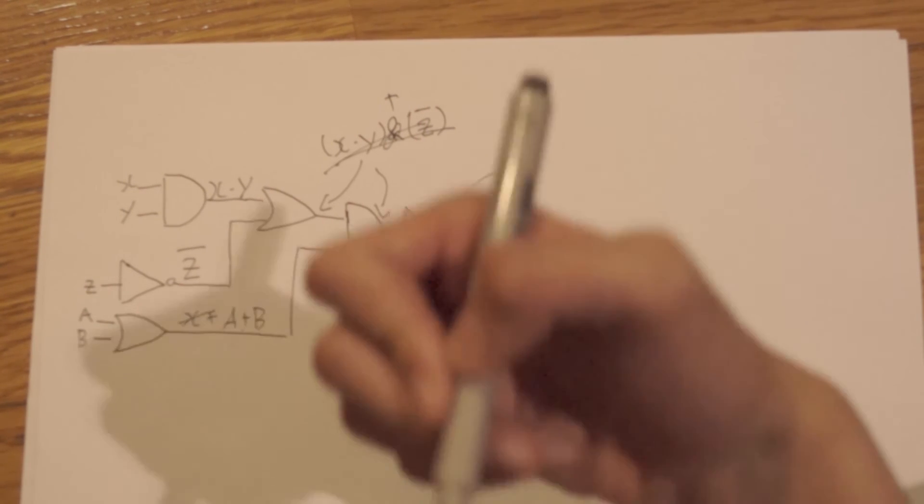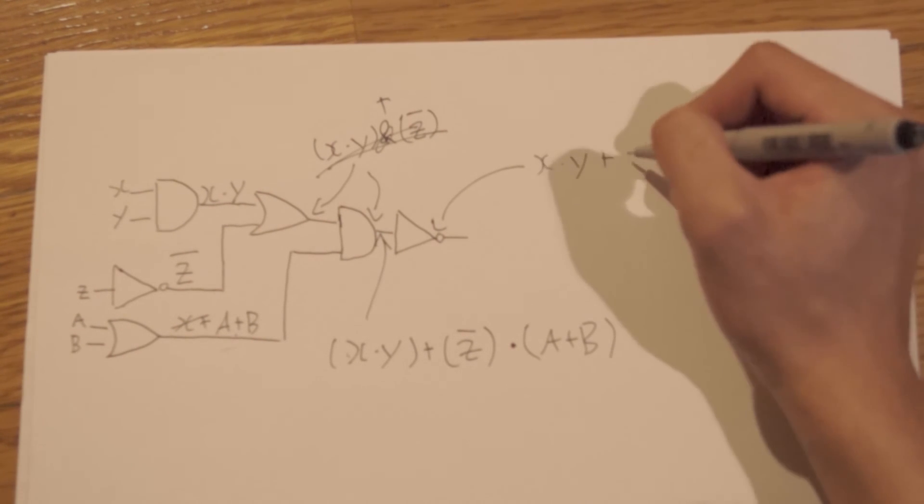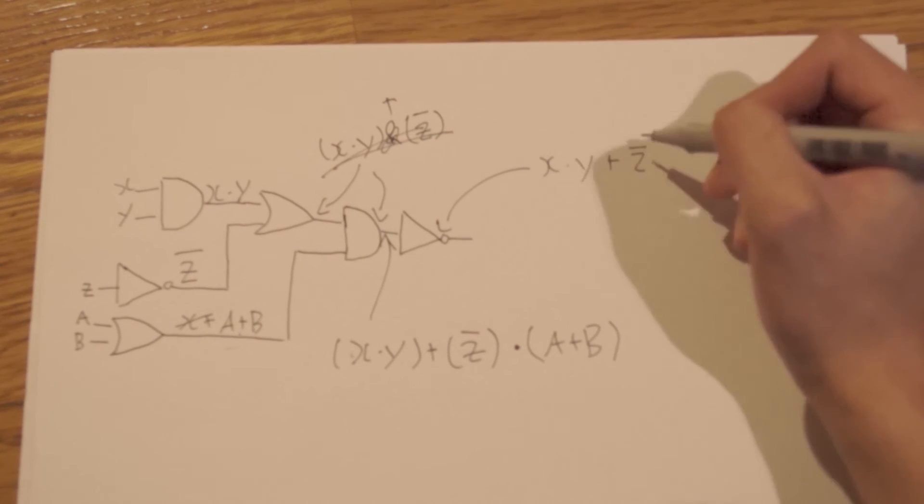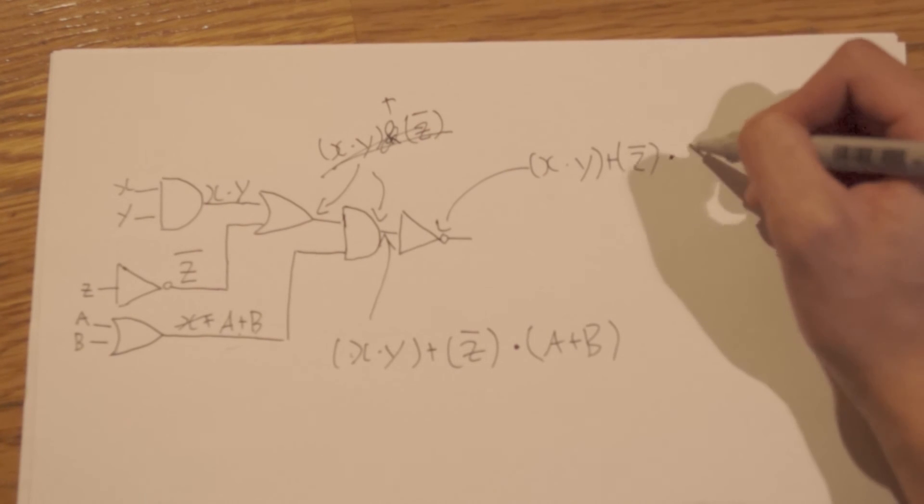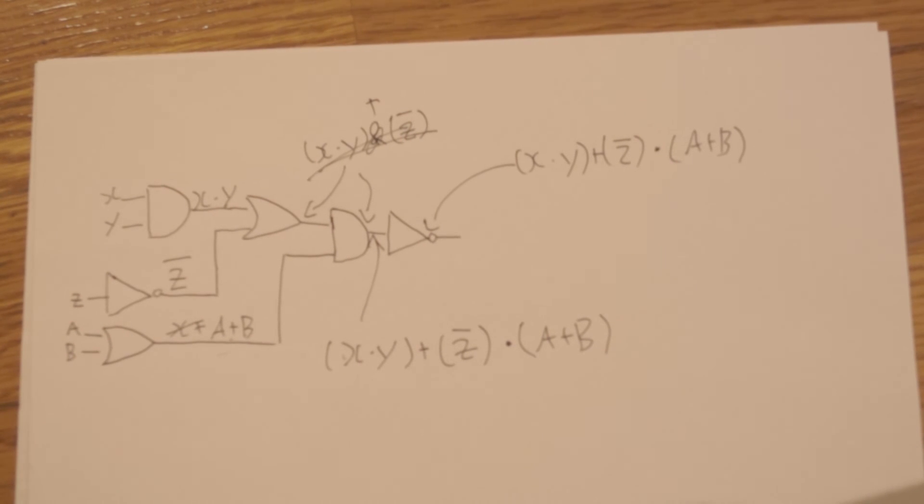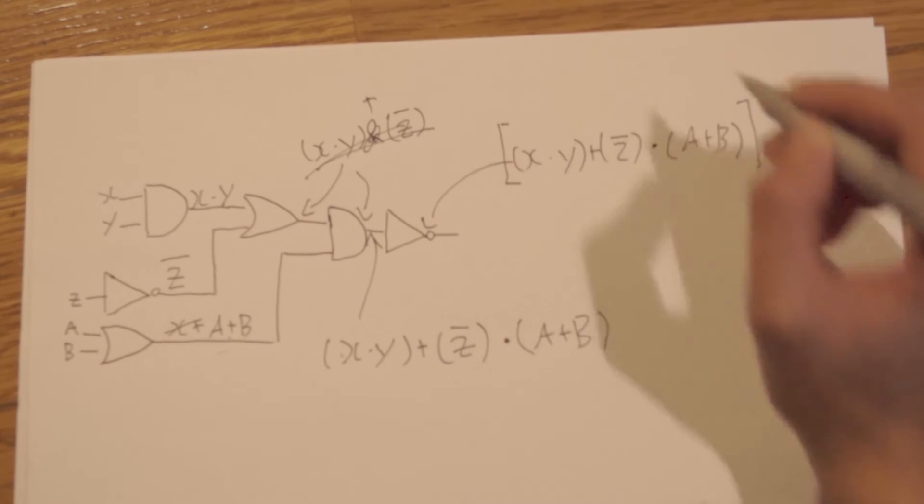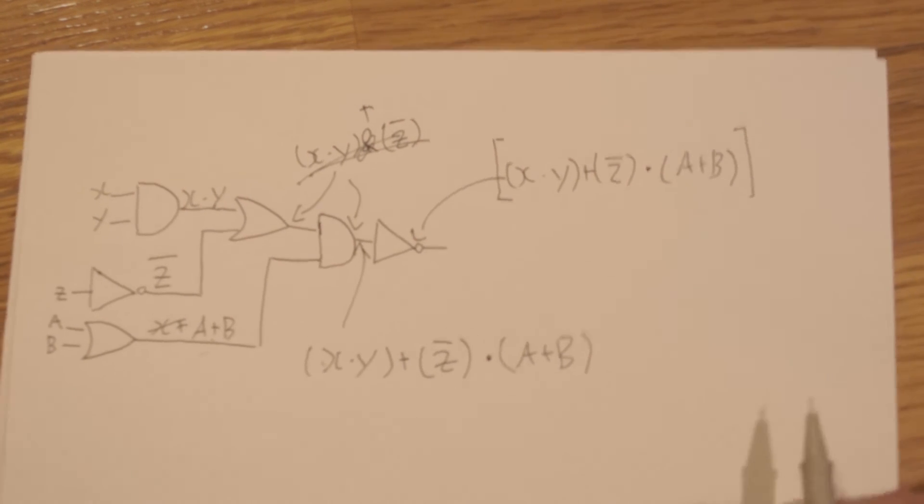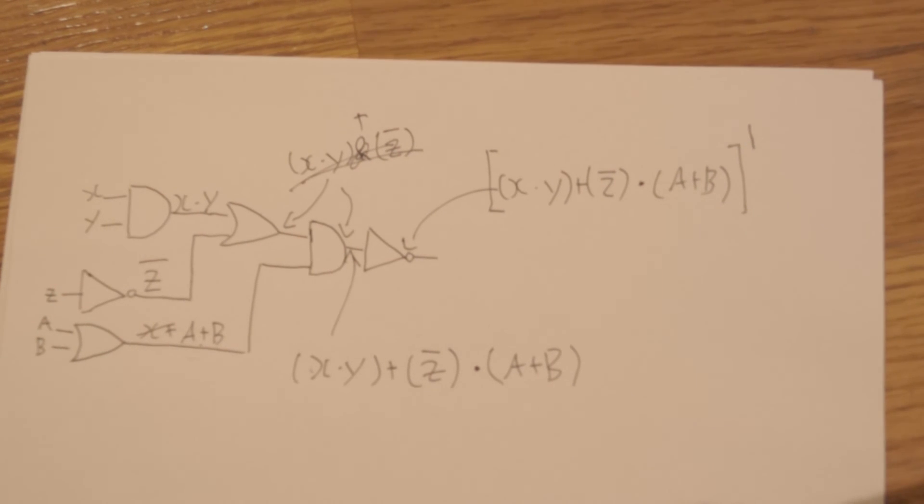Let's do x·y plus z̄. Now we can put the brackets and then a dot here, and then a plus b. Now we want to display that it is the inverted version, so we can do square brackets if you've ever done math before, and then you can do the complement. If you've ever done math, you know that complement is just the bar over there.